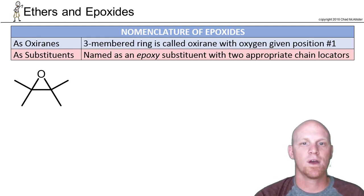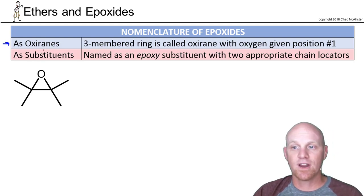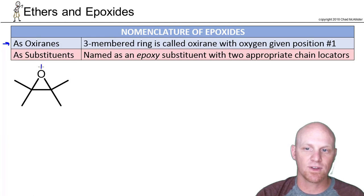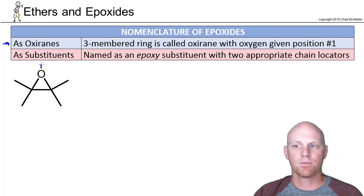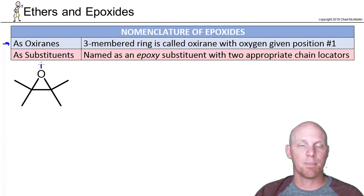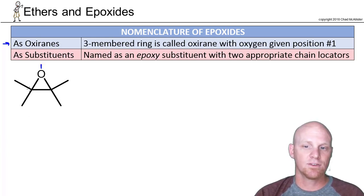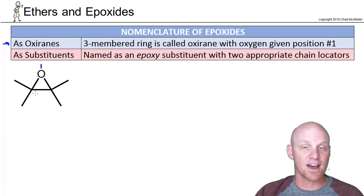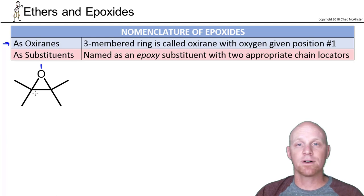There are a couple of different ways to name epoxides. One way is to name them as oxiranes. When naming an oxirane, you're essentially naming the three-membered ring, and the oxygen actually gets a number. In most organic nomenclature you only number the carbon chain, but when naming an epoxide as an oxirane, the oxygen is always number one, and then the two carbons are two and three. Whichever carbon has a substituent first usually gets the two. If there's a tie, then you look at the second substituent, or if there's still a tie overall, you go to alphabetical order.